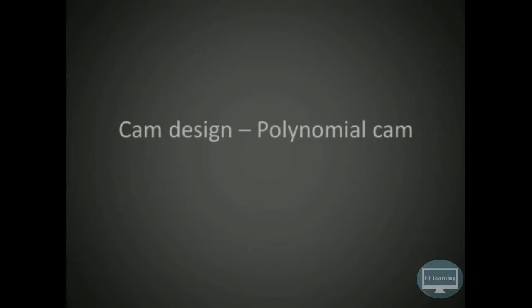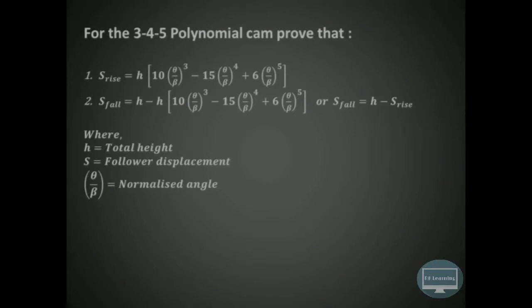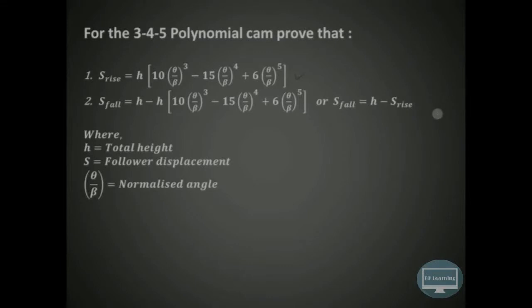In this video we will try to understand how to design a polynomial cam. We have to derive the equation for S-rise and S-fall in case of a 3-4-5 polynomial cam. H is the total height in this expression. S is the displacement of the follower and theta upon beta is known as the normalized angle. This is the equation we want to prove for the rise motion, that is the outward stroke, and during the fall of the follower, that is the return stroke.